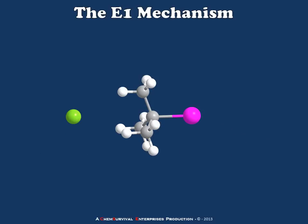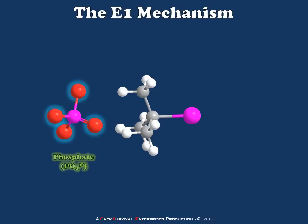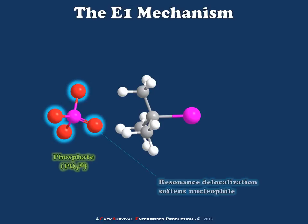Let's say that I've got a t-butyl halide as in this example, but instead of a stronger nucleophile, I've got something like phosphate anion. Now phosphate anion has an abundance of lone pair electrons and a high negative charge, but those electrons are distributed around a very large volume within the phosphate. Furthermore, they're delocalized by resonance, which attenuates their nucleophilicity. So a phosphate anion is very unlikely to act as a nucleophile.